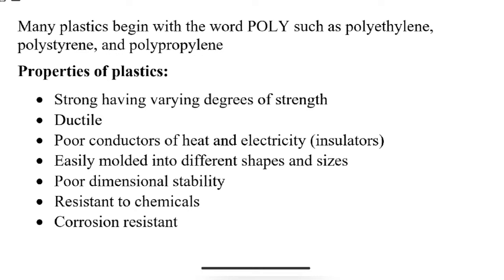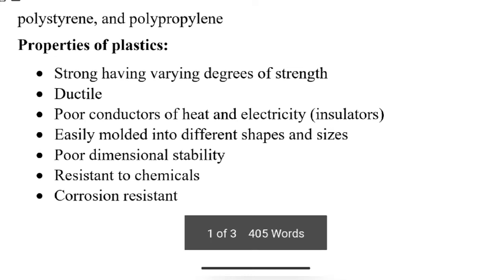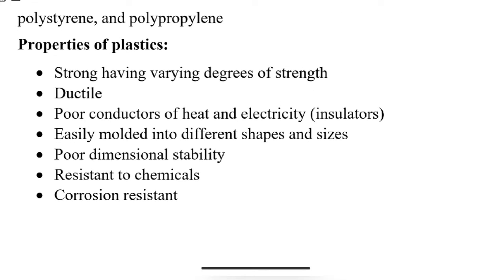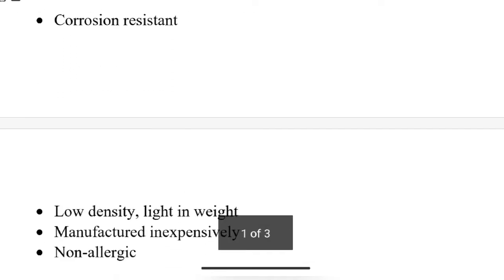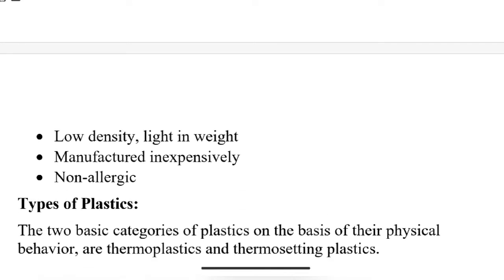Plastics can be easily molded into different shapes and sizes. They have poor dimensional stability. They are resistant to chemicals — if you add chemicals, they don't react. They are also corrosion resistant, unlike metals, and they have low density, meaning low weight.